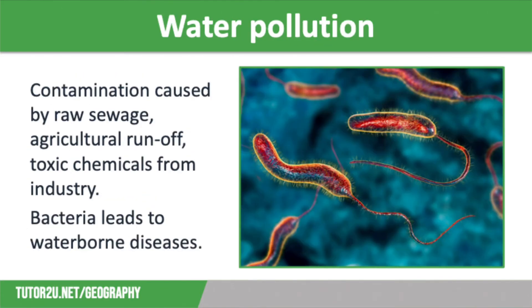Our third cause of water insecurity is pollution. There are many reasons that water becomes contaminated, including raw sewage dumped into waterways, agricultural runoff from chemical fertilisers and pesticides, and toxic chemicals from industry that haven't been disposed of properly. Water contaminated with chemicals and bacteria is unsafe for human consumption, increasing the risk of waterborne diseases such as cholera and typhoid. In LICs, many people still have to use polluted rivers for their water needs, and as a result, many die premature deaths linked to a lack of access to safe water.